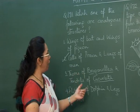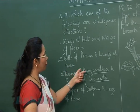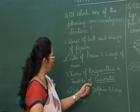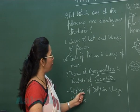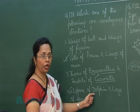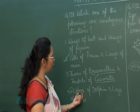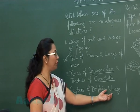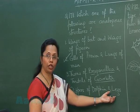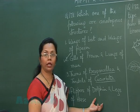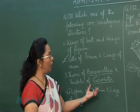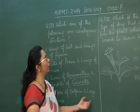Therefore, gills of prawn and lungs of man are the best example of analogous structures — same function (respiration) but different origin. Thorns of Bougainvillea and tendrils of Cucurbita are homologous. Flippers of dolphin and front legs of horse are also both forelimbs, so they can be taken as homologous.